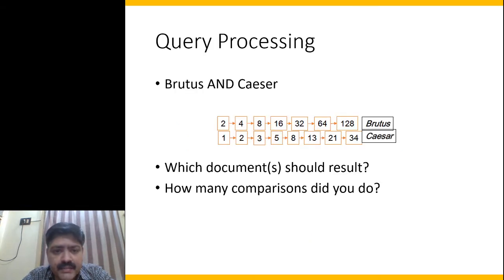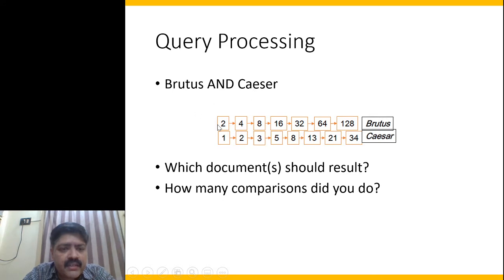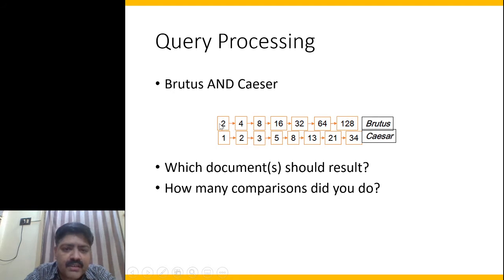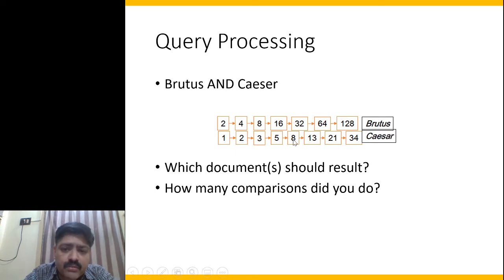Let's take an example. Say we have a query 'brutus AND caesar'. We take the postings list of brutus and the postings list of caesar, and we are interested in finding documents that contain both. By traversing both lists and looking for common elements, we can see that document ID 2 and document ID 8 both contain brutus and caesar — those are the documents we are looking for.